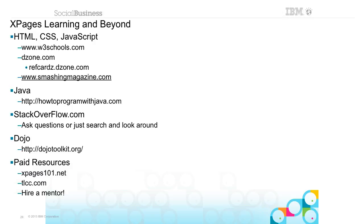Outside of XPages, because we're now playing in this bigger ocean, you have to learn about HTML and other stuff. I like to go to W3Schools. I like to monitor DZone.com to keep up with things — DZone has RefCards, which are basically cheat sheets; you can download CSS, JavaScript, and jQuery cheat sheets. I also like SmashingMagazine.com, which has random articles and free icons and graphics, many of them even free for commercial use.